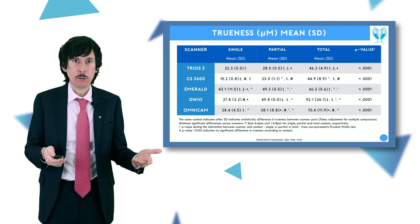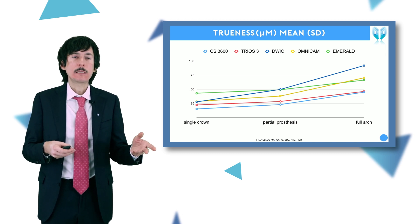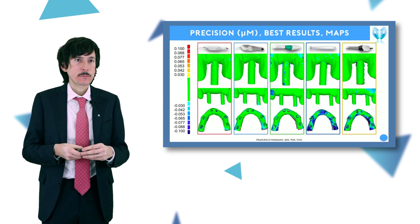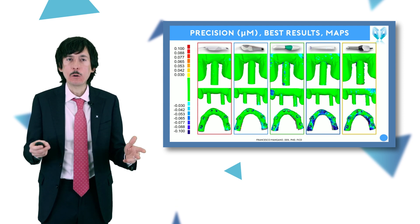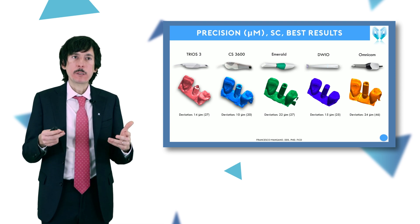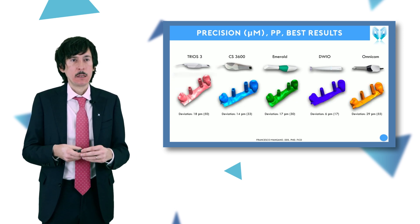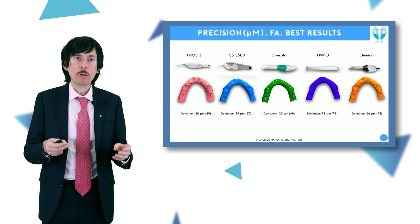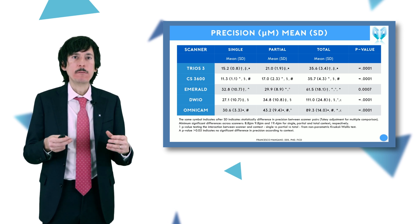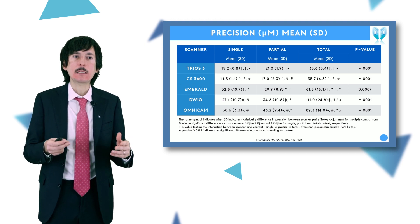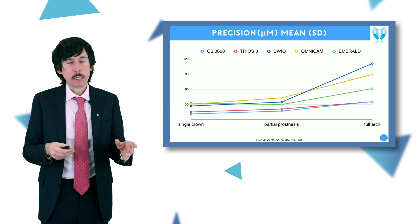For the bridge, again very good results — low level of error, with best results for the CareStream and Trios scanner. For the full arch mesh-to-mesh superimposition, we have error comprised between 30 and 40 microns for the best scanners. The table shows mean trueness plus standard deviation, with best results achieved by CareStream and 3Shape, with statistically significant differences between the different scanners and between the different applications. Error increased with the bridge and increased even more with the full arch.